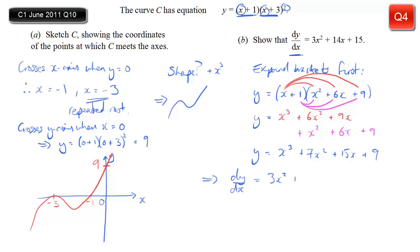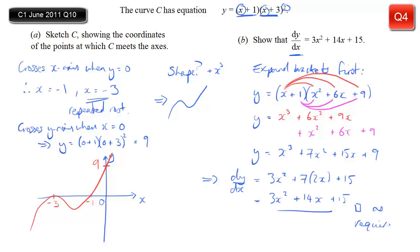Collecting like terms, y equals x cubed plus 7x squared plus 15x plus 9. Differentiating: dy/dx equals 3x squared plus 14x plus 15, which is exactly what was required.